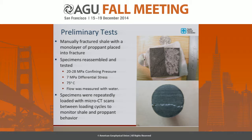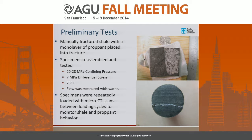For the preliminary tests, we took some shale and distributed a monolayer of proppant into the fracture, reassembled the shales, and then performed a series of flow tests under confining and differential stress at 75 degrees C, flowing water through the sample. Those tests were paused, the specimen was taken out and CT scanned, then put back in — rinse and repeat — so we could watch the evolution of the fracture with micro-computed tomography to see what's happening to the proppant and the shale walls.